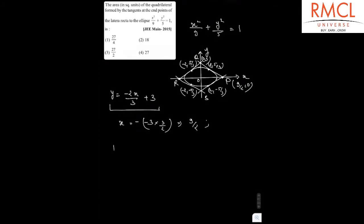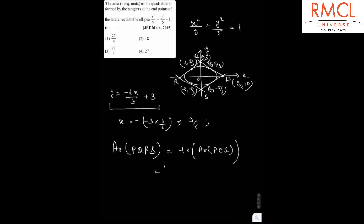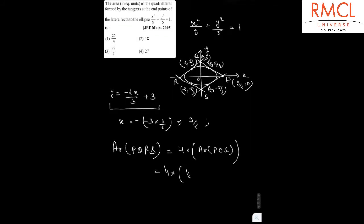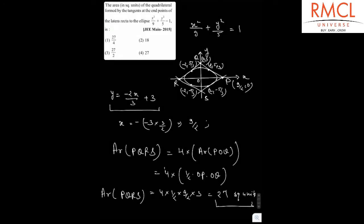The area of PQRS is equal to 4 times the area of triangle POQ. The area of triangle POQ is (1/2) × OP × OQ = (1/2) × (9/2) × 3. Multiplying through: 4 × (1/2) × (9/2) × 3 = 27. So the area of PQRS is 27 square units, and the correct option is option number 4.